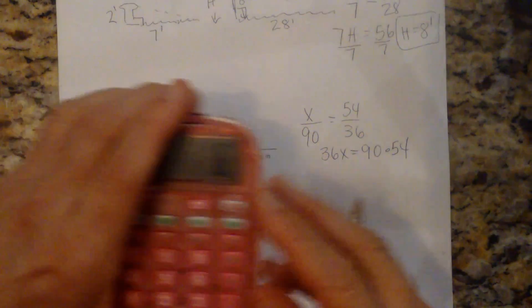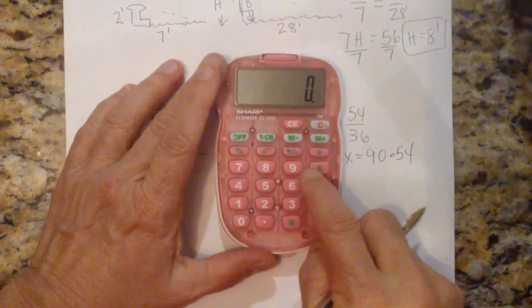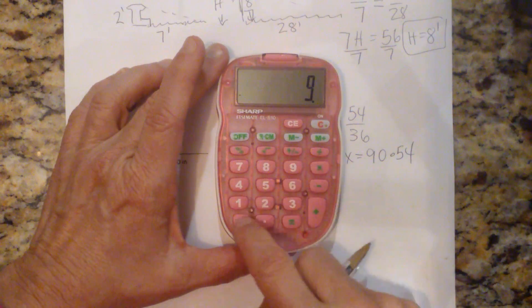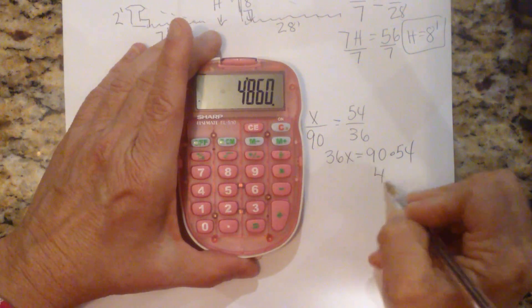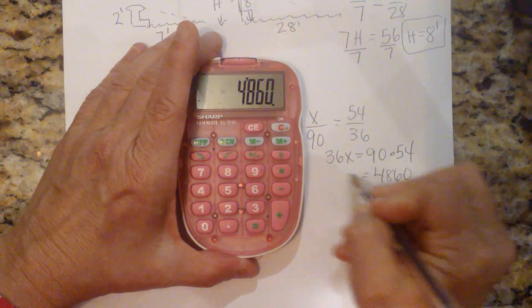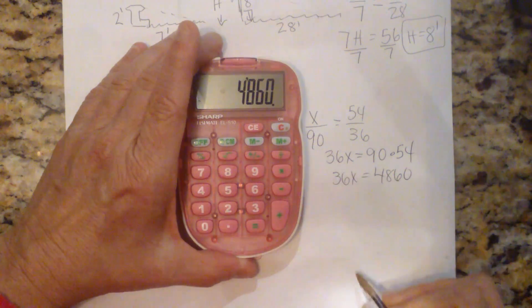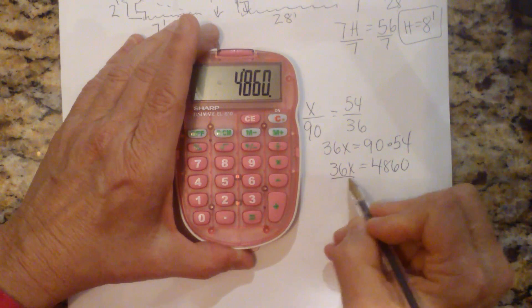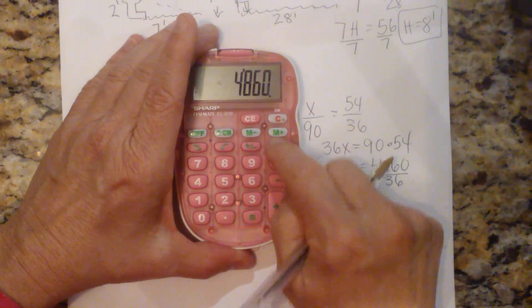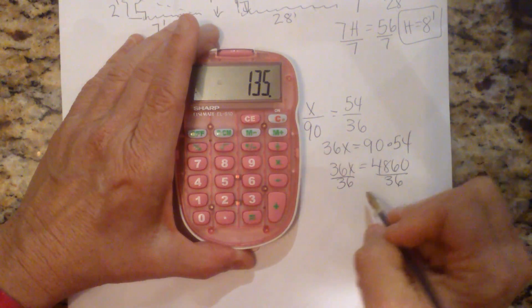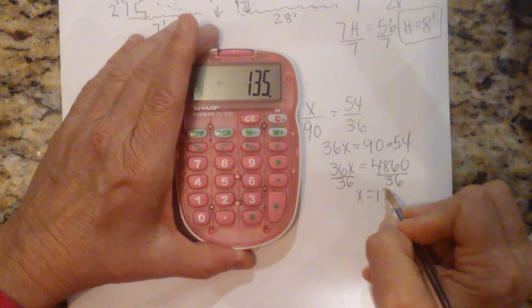Now I'm going to grab my calculator and take 90 times 54. And that gives me 4860 is equal to 36x. To get the x by itself, we're going to divide by 36. So let's divide this by 36.